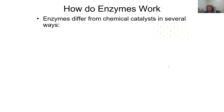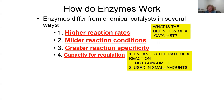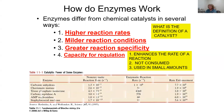Enzymes differ from chemical catalysts in several ways: they have higher reaction rates, operate under much milder conditions, are more specific in their reactions, and have the capacity for regulation. For example, staphylococcal nuclease catalyzes a reaction that occurs at only 1.7 × 10⁻¹³ times per second without the enzyme.